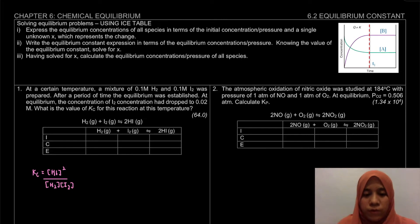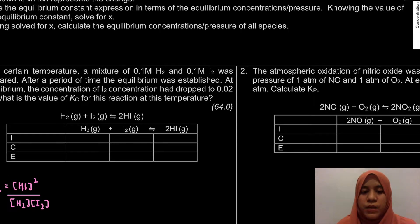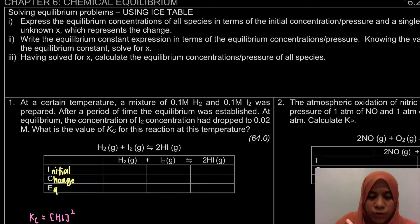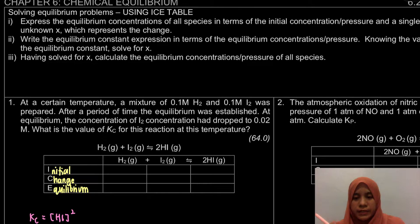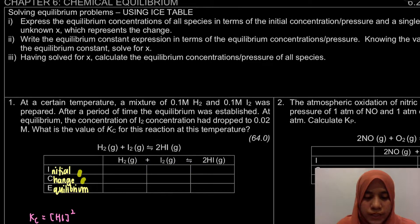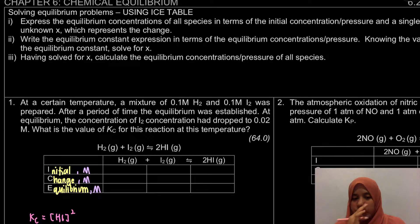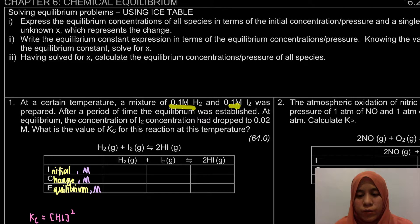From the equation we need to build the ICE table. The notes already have the table set up. ICE stands for Initial, Change, and Equilibrium — make sure to write out what each letter means. Because I don't want to write the units repeatedly inside the table, I'll write the unit at the top. From the information given, we're dealing with molarity, so the unit here is molar, capital M. The question states a mixture of 0.1 molar H2 and 0.1 molar I2 was prepared.